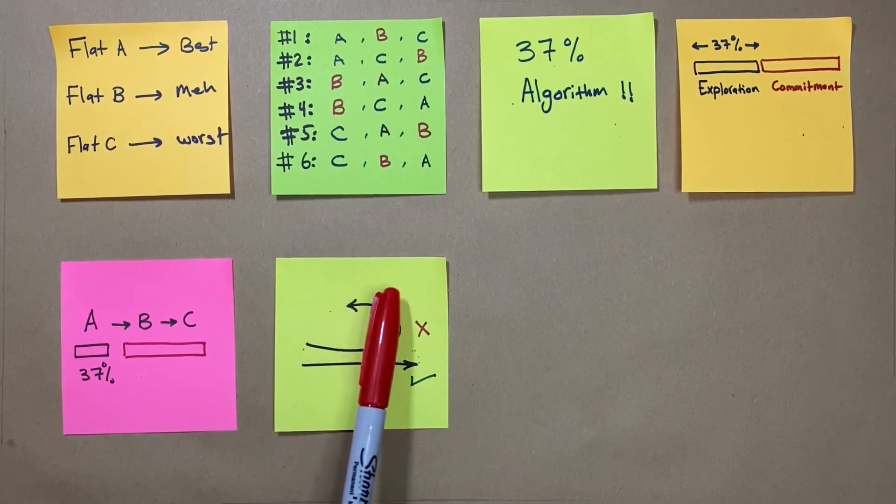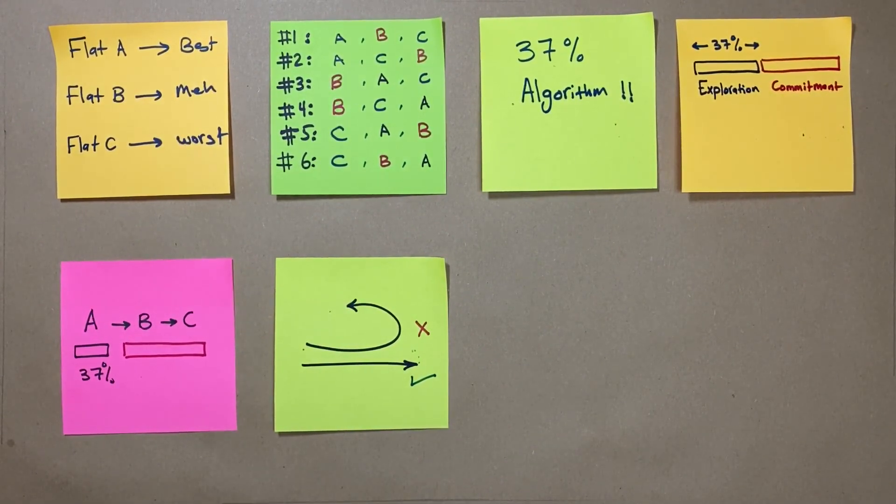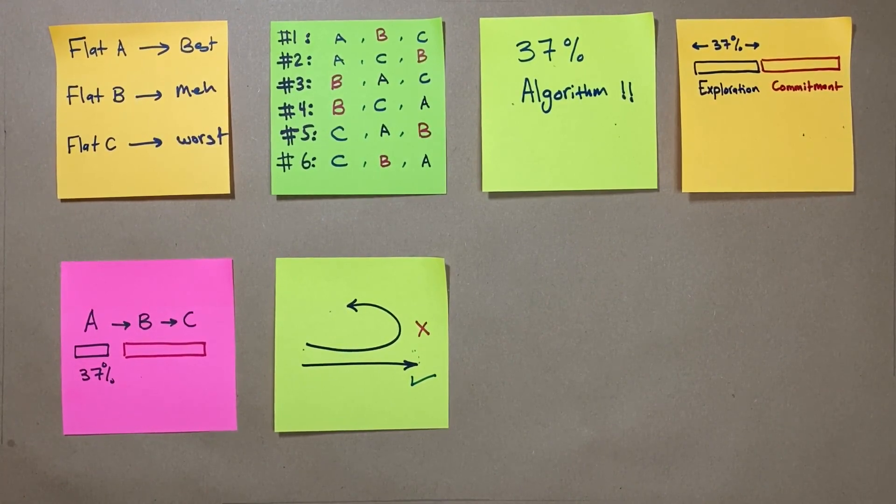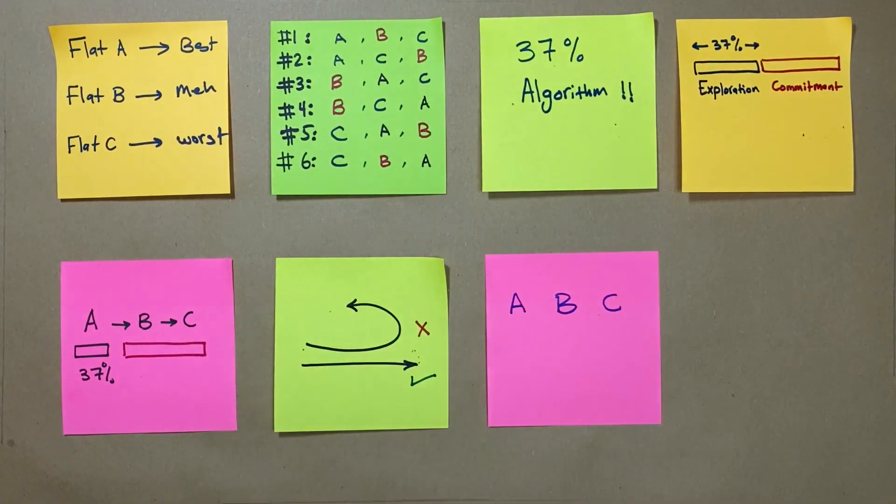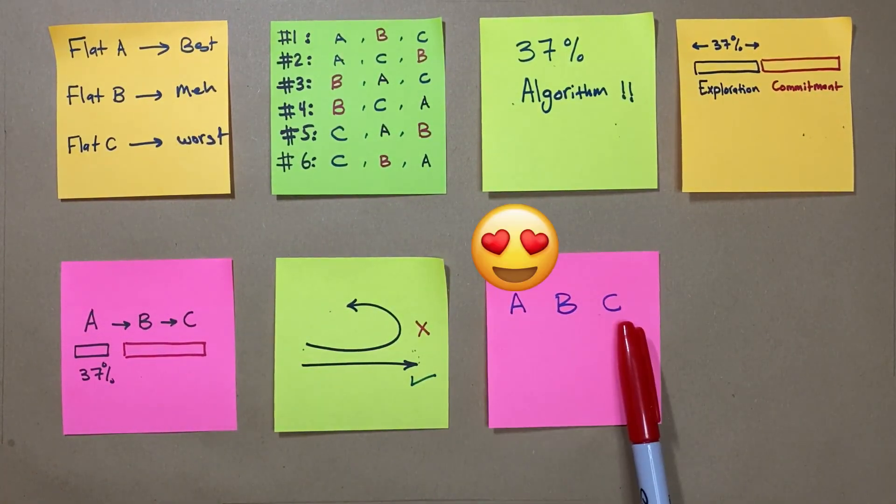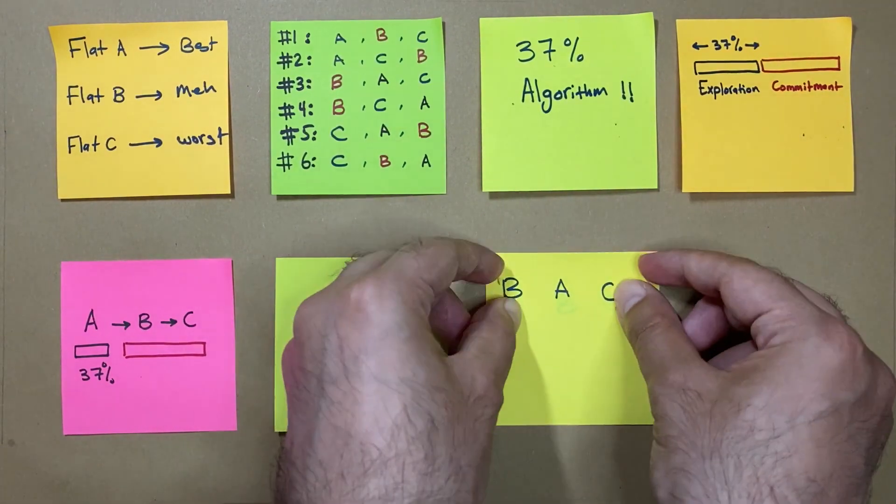Now as we saw, the 37% algorithm doesn't guarantee a successful choice every time, but it offers a significant improvement over random selection. Let's examine another two cases and their outcomes. Remember, A is the best, C is the worst. Let's check this order.